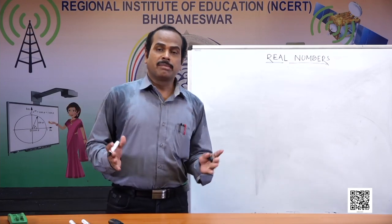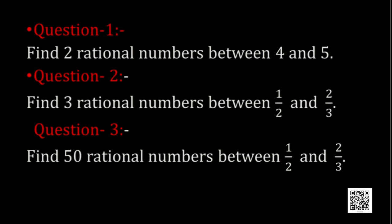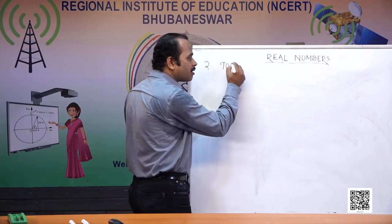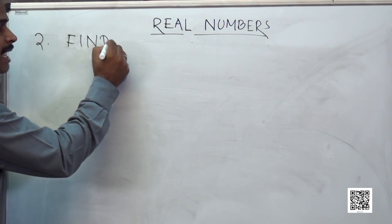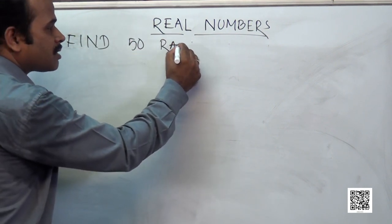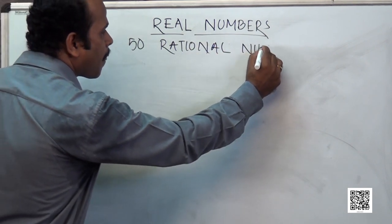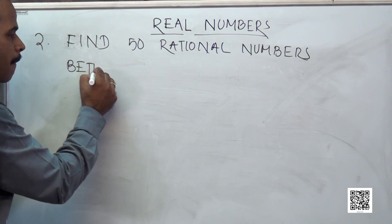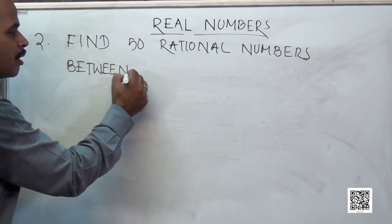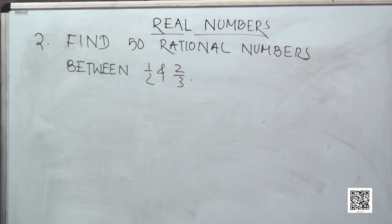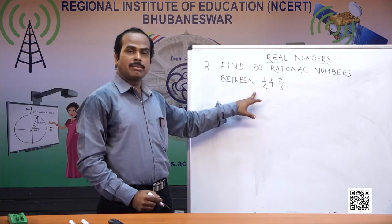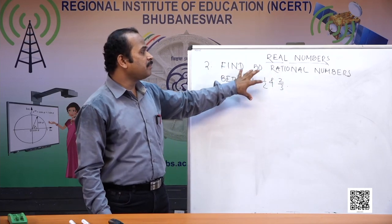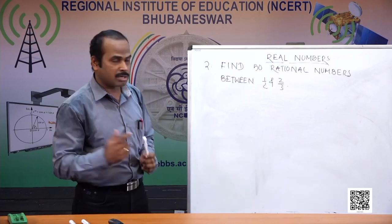Let us find 50 rational numbers between 1 by 2 and 2 by 3. The two rational numbers given are 1/2 and 2/3. We need to insert 50 rational numbers between them. Instead of applying (a plus b) by 2 repeatedly, we will use another method.